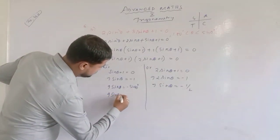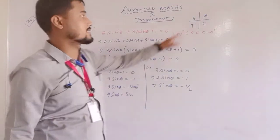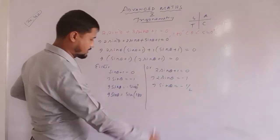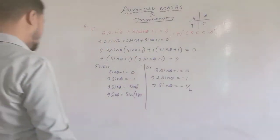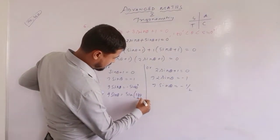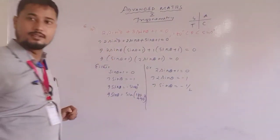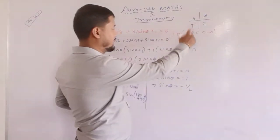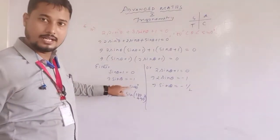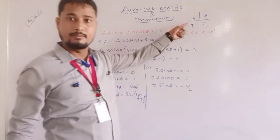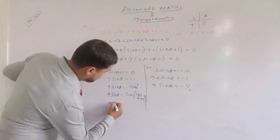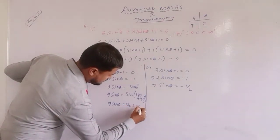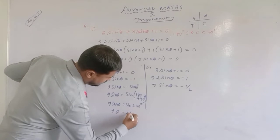For sinθ = -1: sin of which angle equals -1? That is in the third quarter. We can write sinθ = sin(180° + 90°) = sin(270°). So implies θ = 270°.